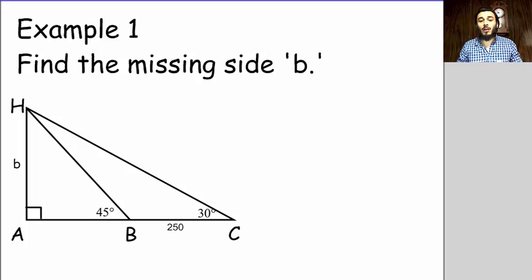So here it is, and it says to find the missing side B. So that's this side here, HA, that we're looking for. Or we could just call it side B because it's across from this angle here, angle ABH. Alright, so let's brainstorm a little bit before we jump into it.